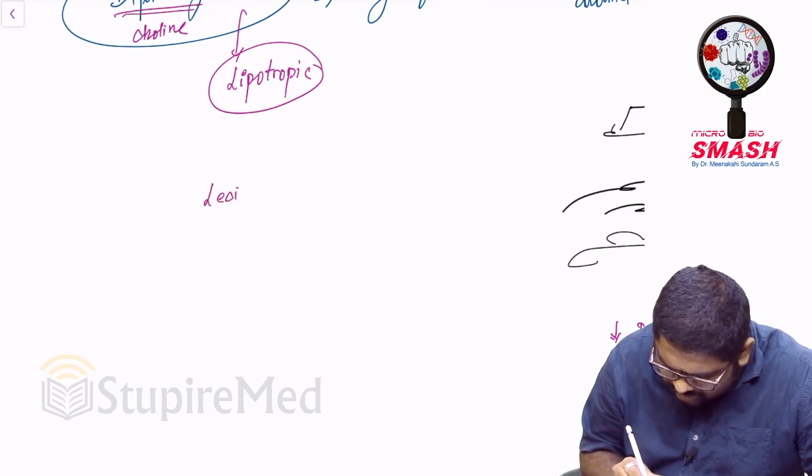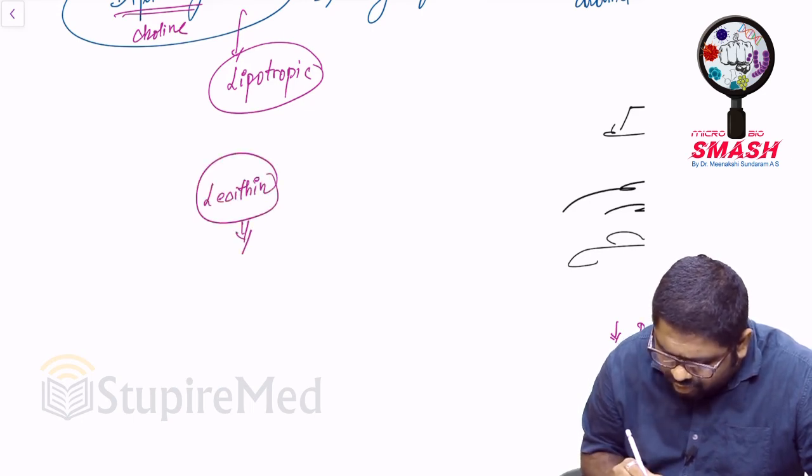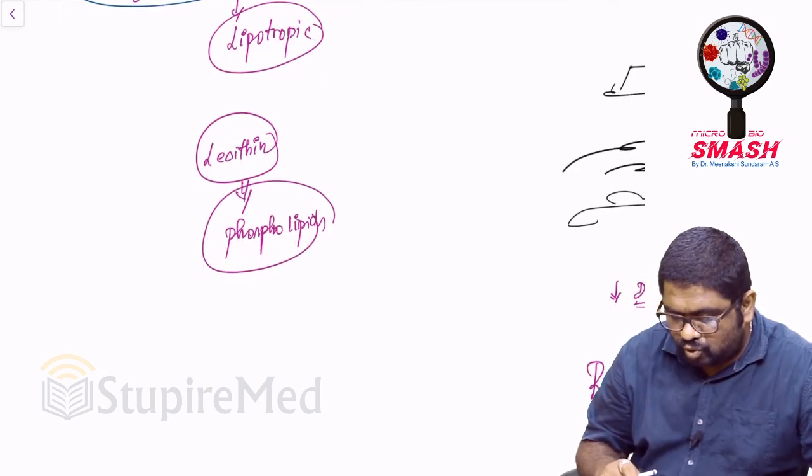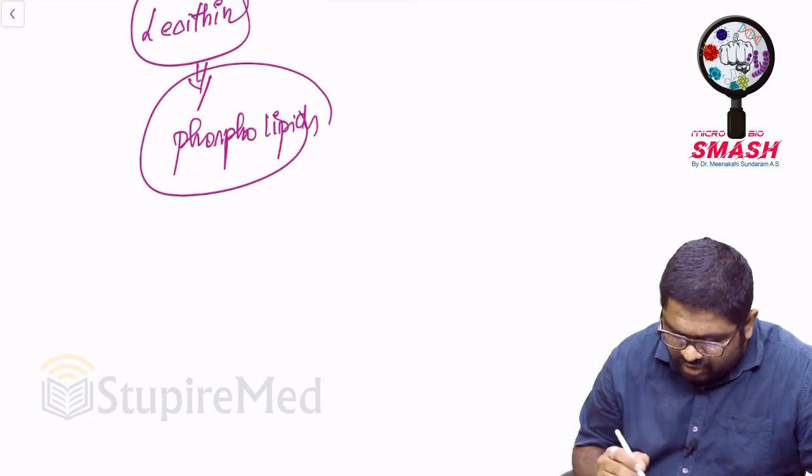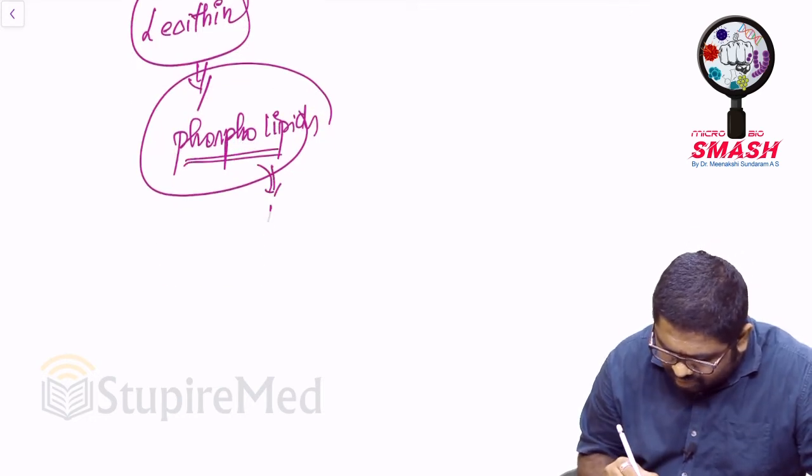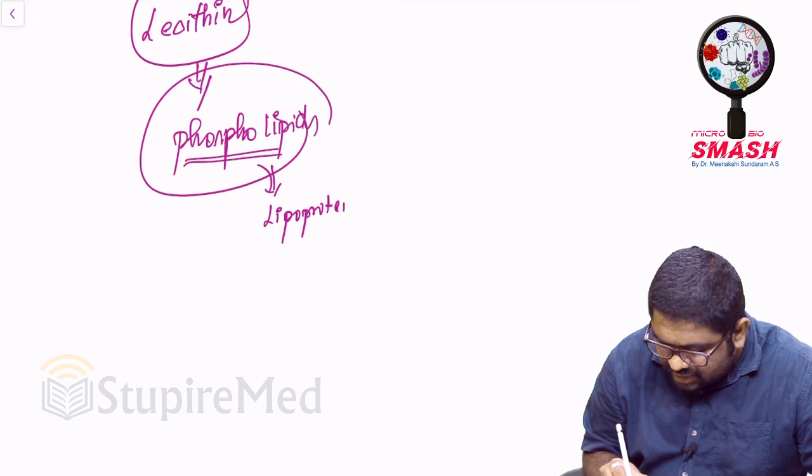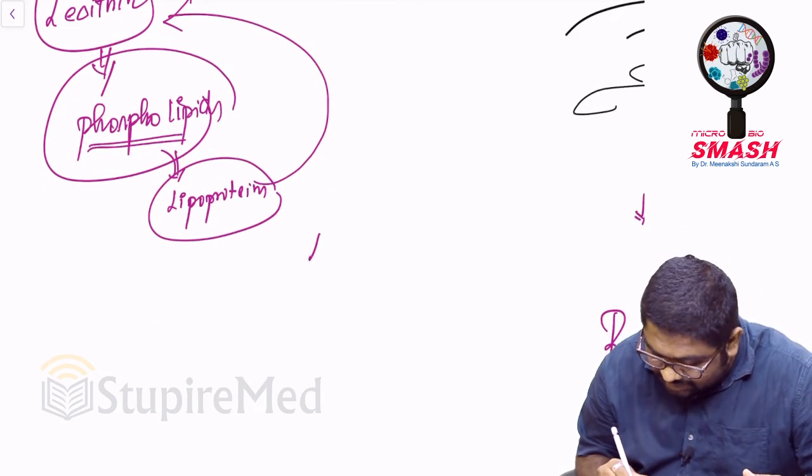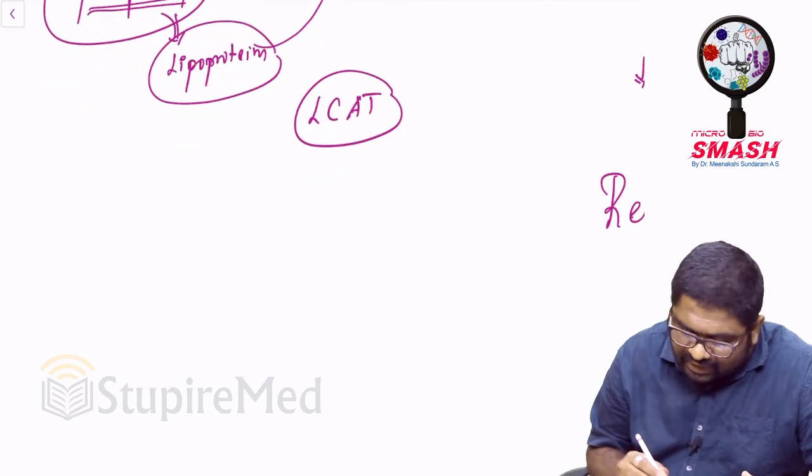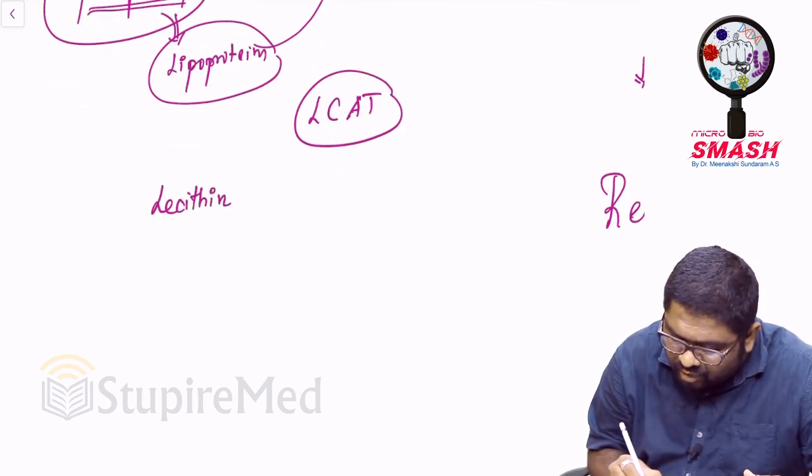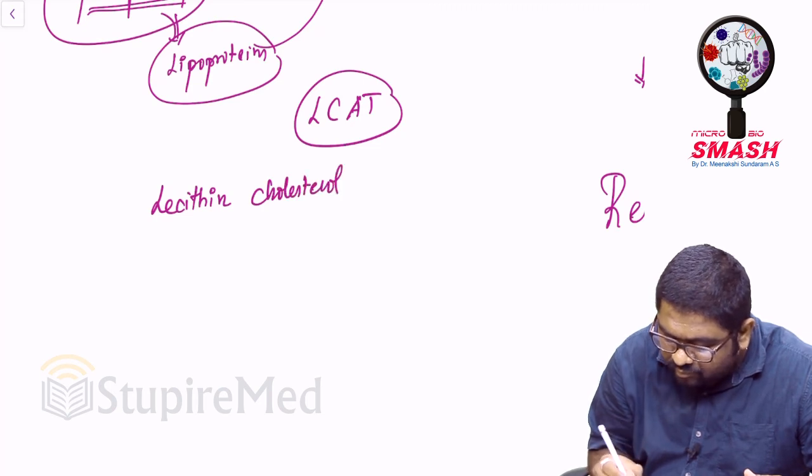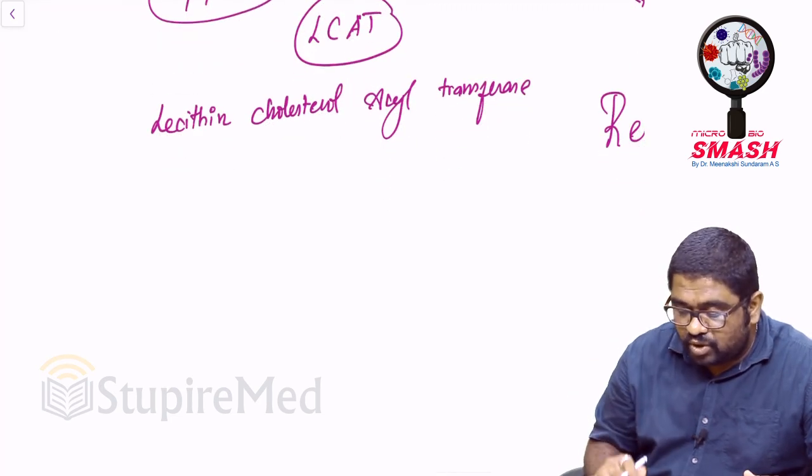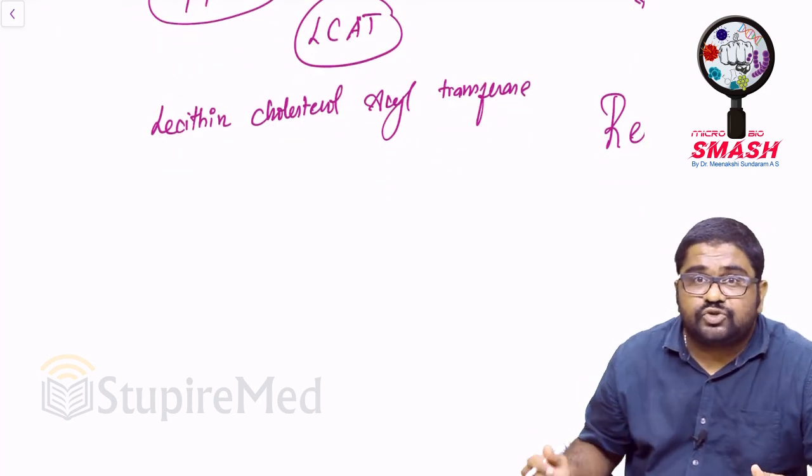Also lecithin is an important component of phospholipoproteins. How so? You will be knowing that many phospholipoproteins have been a part of lipoproteins. And these lipoproteins will actually carry lecithin. One such proof for that is you have an enzyme called LCAT. What is this LCAT? Lecithin cholesterol acyltransferase.